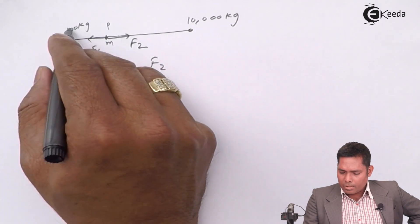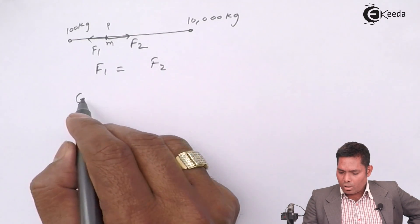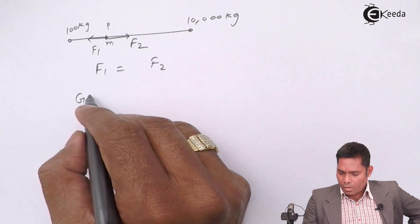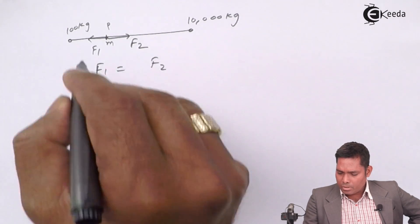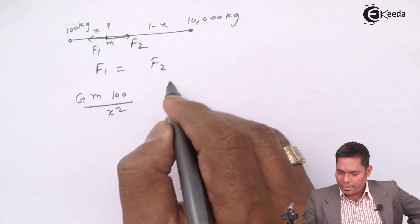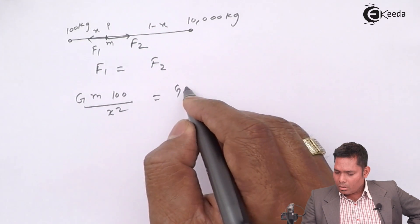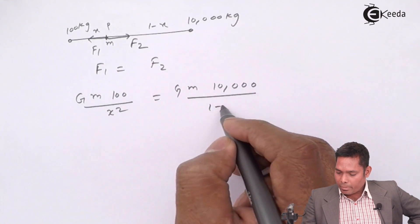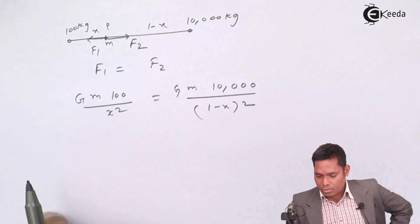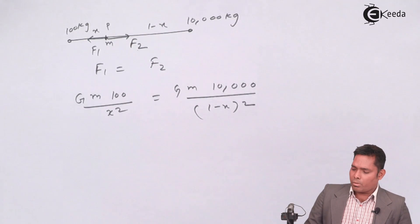If this is having mass m, then Gm times 100 over x squared - because this distance is x - equals Gm times 10,000 divided by (1 minus x) squared. That's the balance. So from here I will get the value of x.